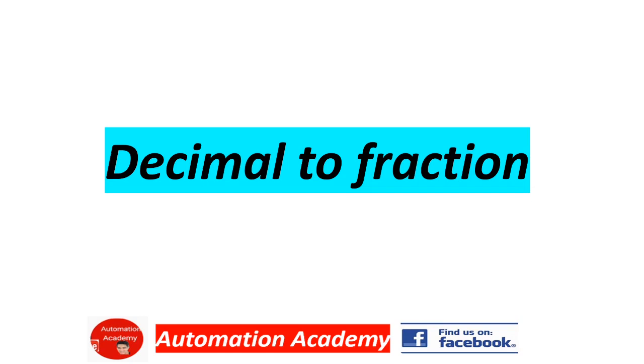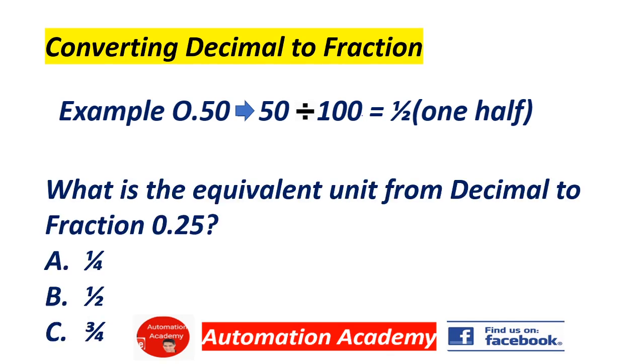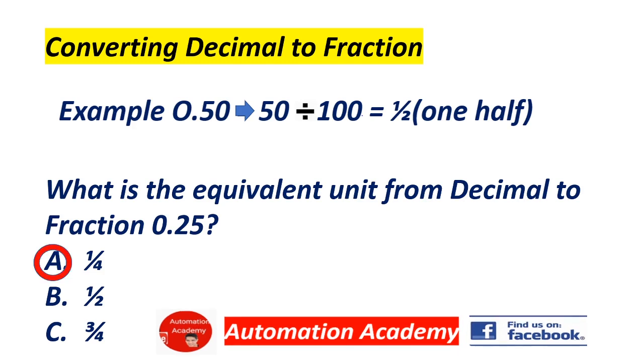Our next topic is Decimal to Fraction. Converting decimal to fraction, example 0.5: 50 divided by 100 equals 1/2. Example: what is the equivalent unit from decimal to fraction, 0.25? A. 1/4, B. 1/2, C. 3/4. Answer: A, 1/4.